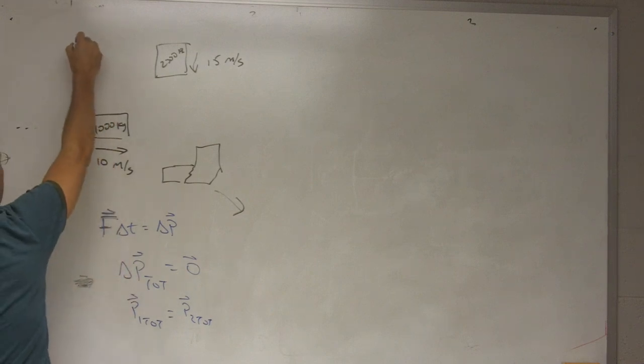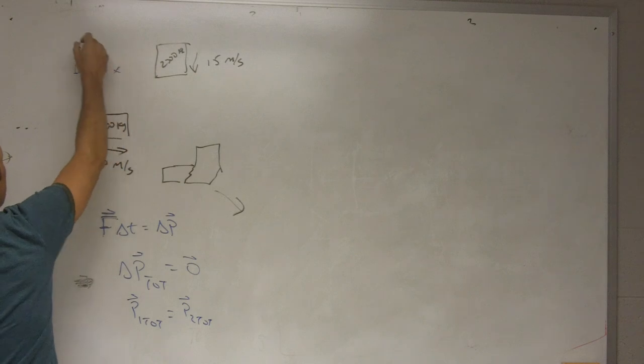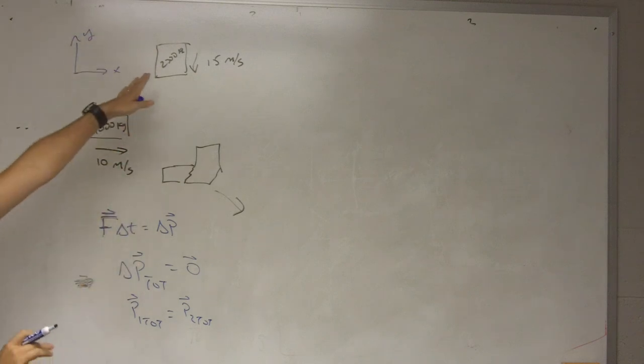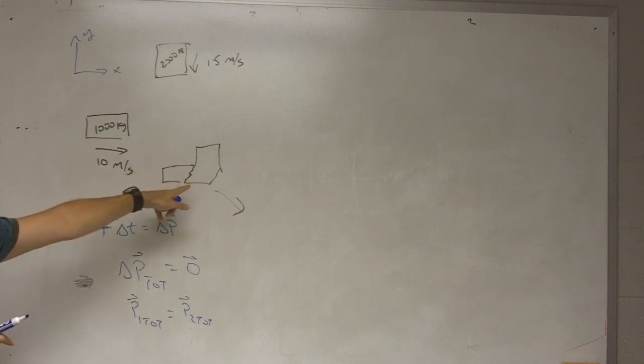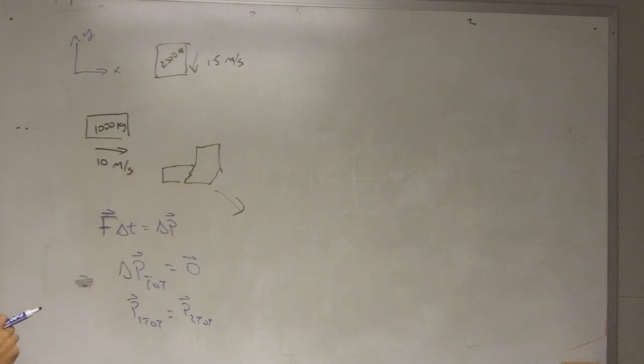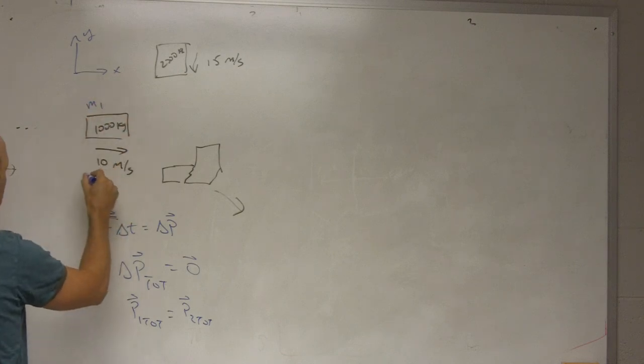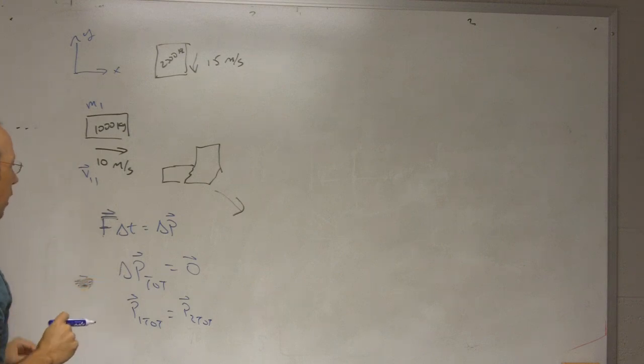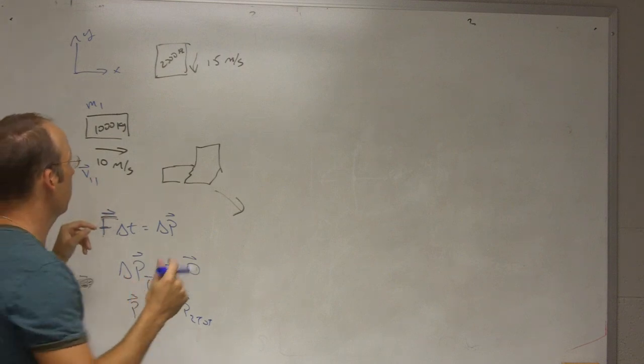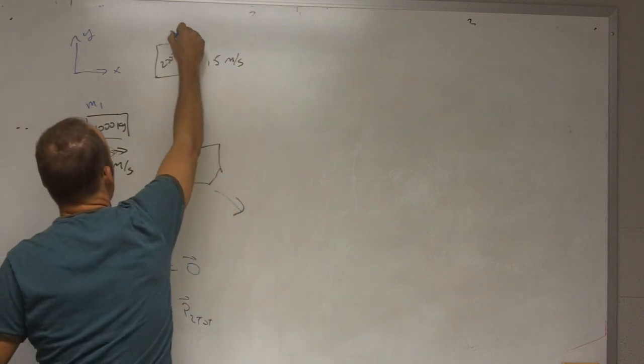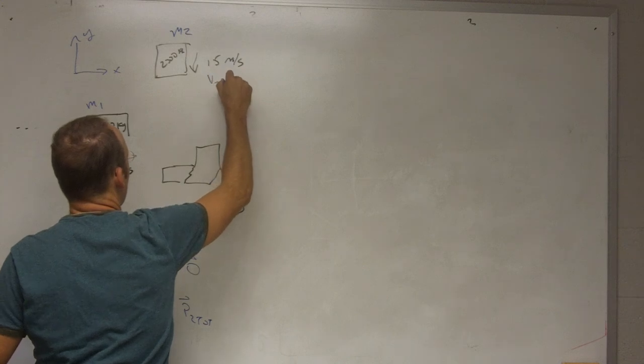Okay. So let's call this the x direction and the y direction. I can get my total initial momentum, and then I'll set that equal to my total final momentum, and everything should work out okay. I already put in numbers, but let me put some variables along with this. Let me call this mass one, and let's call this V one one.